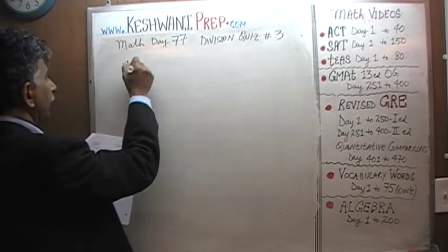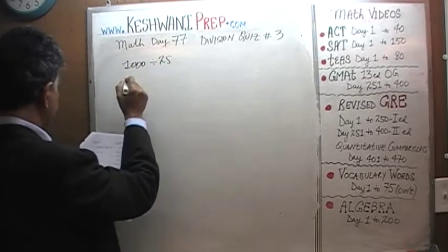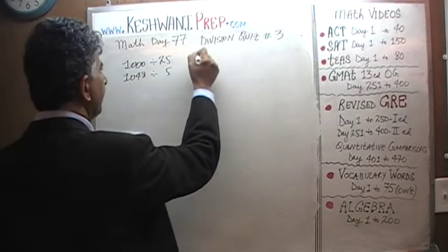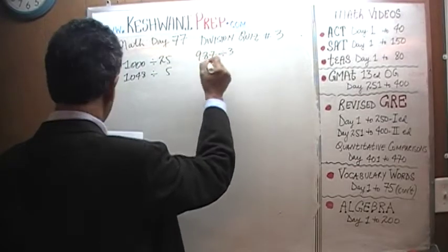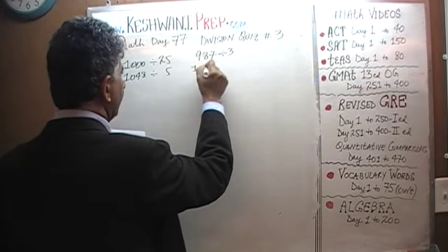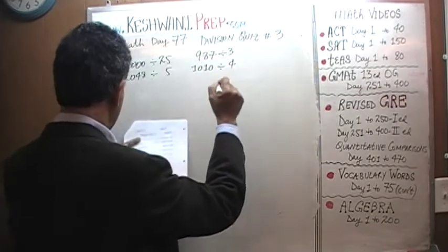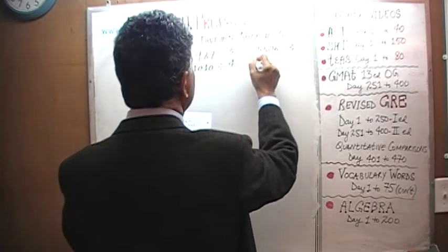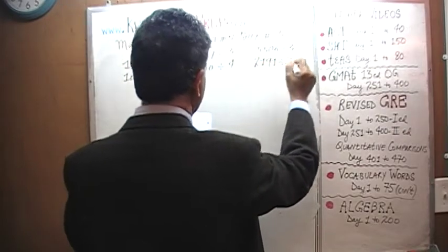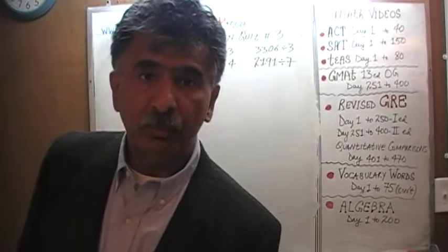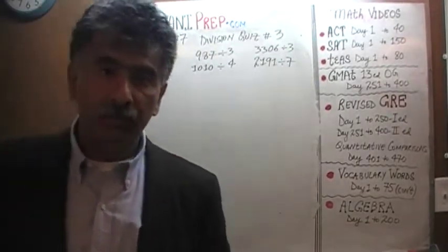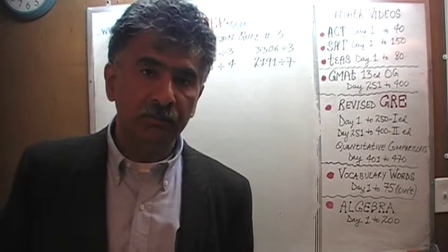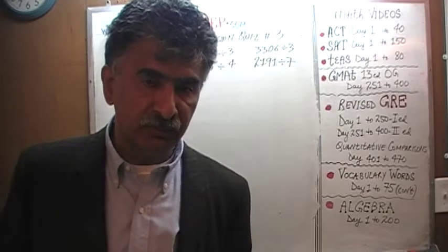Here are the first six problems: 1,000 divided by 25; 1,048 divided by 5; 987 divided by 3; 1,010 divided by 4; 3,306 divided by 3; and 2,191 divided by 7. I want you to pause the video at this point, do them yourself by hand, and then once you have done them, continue the video and compare your work against what we will do together.